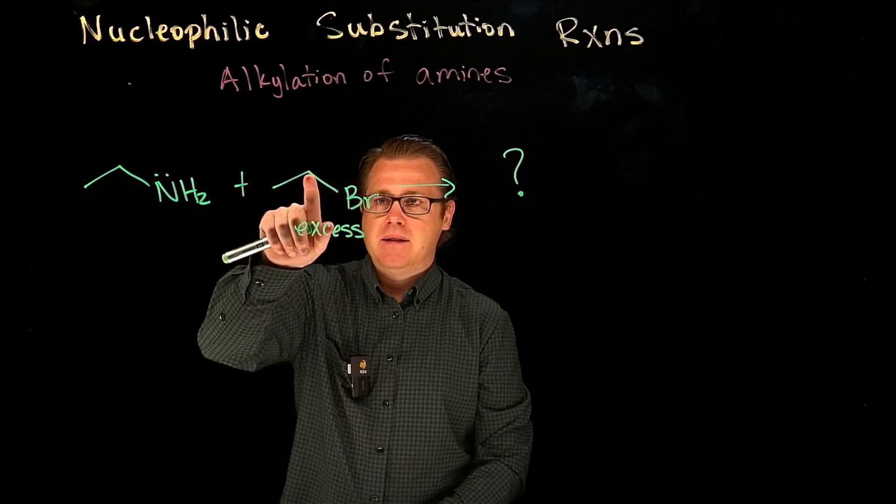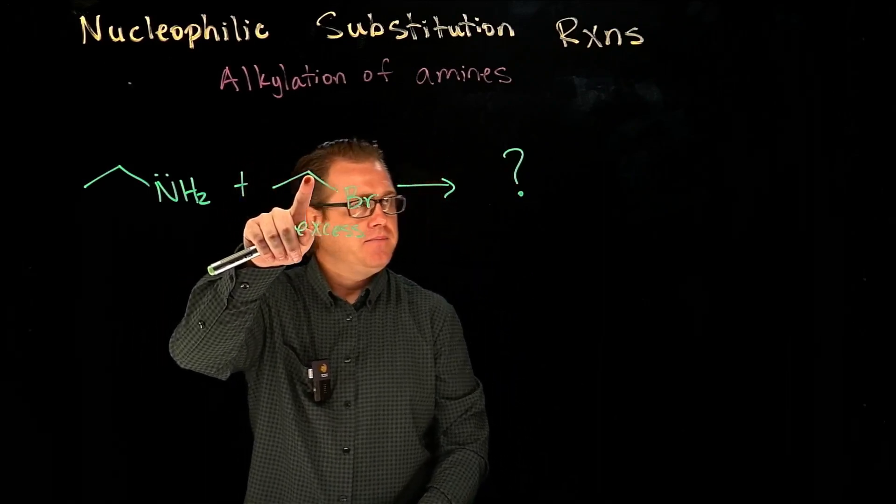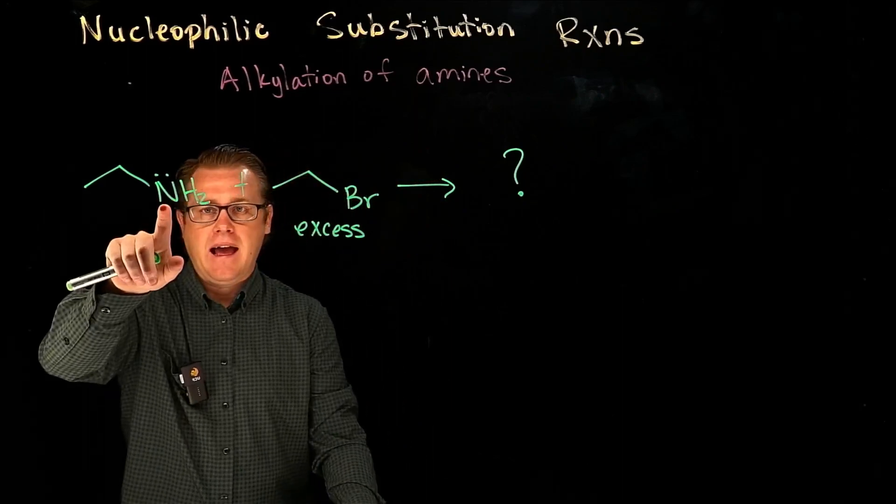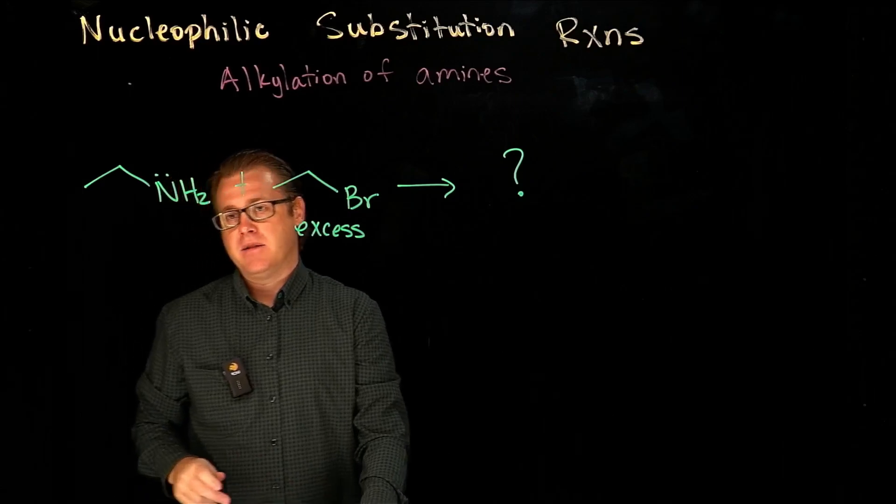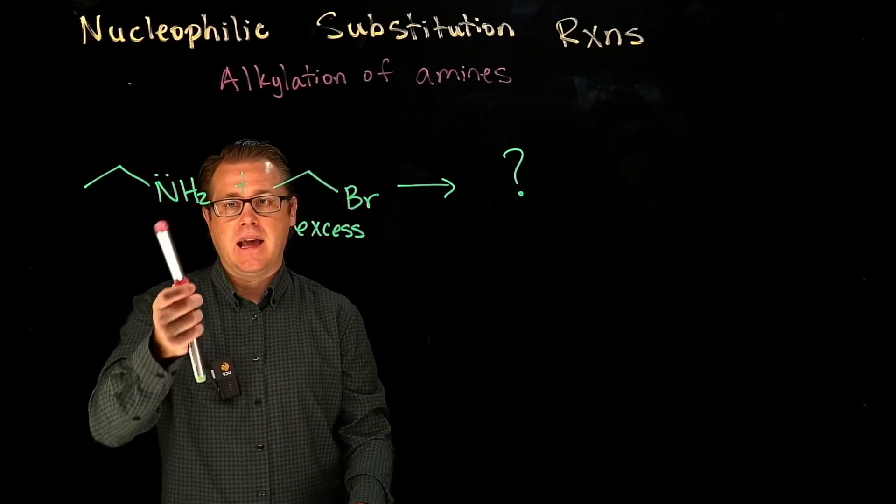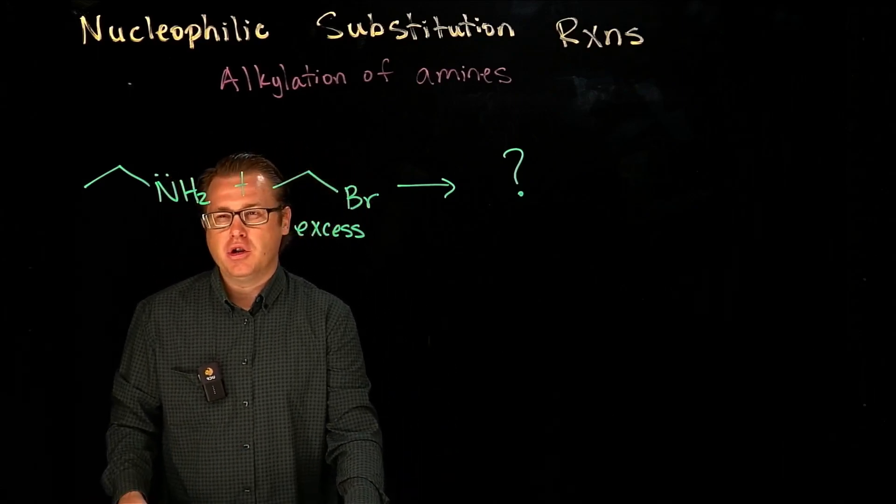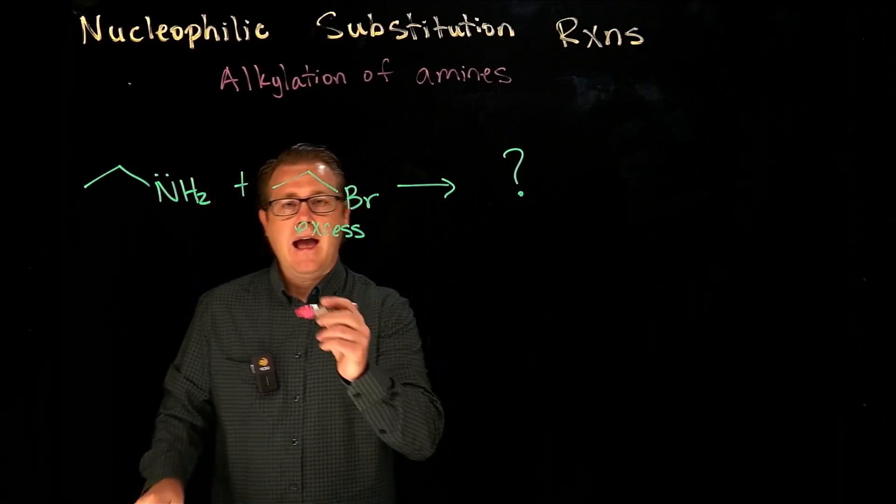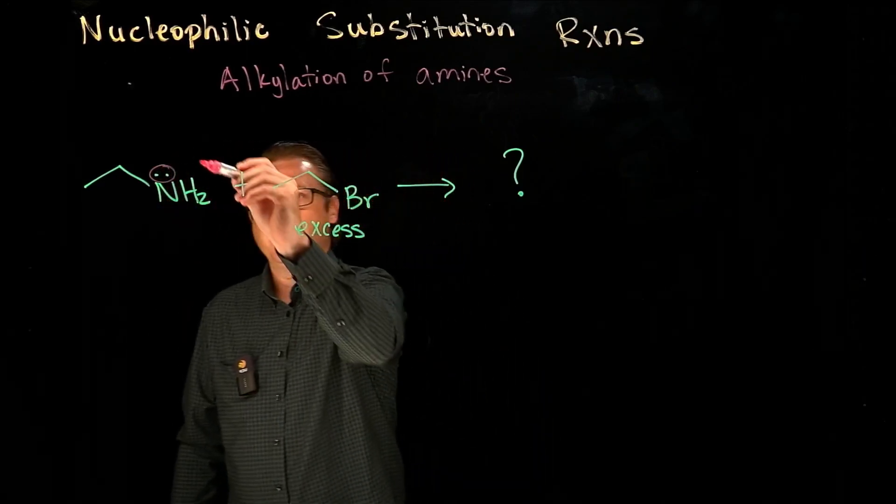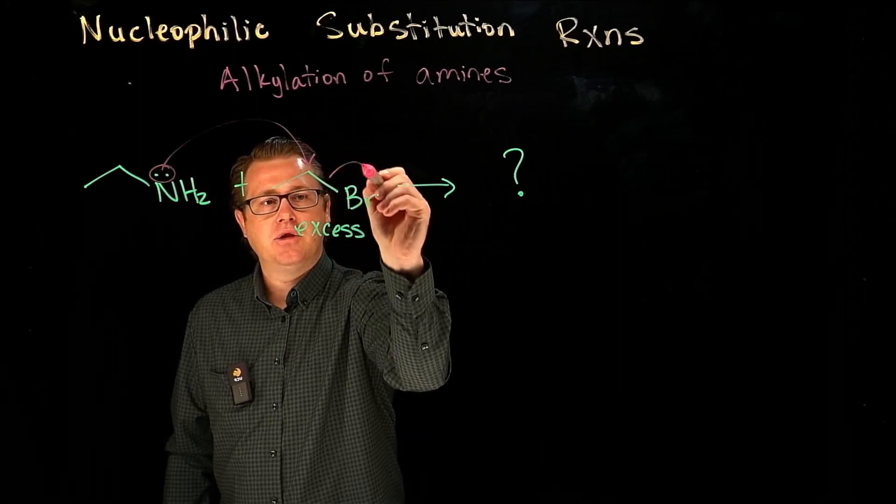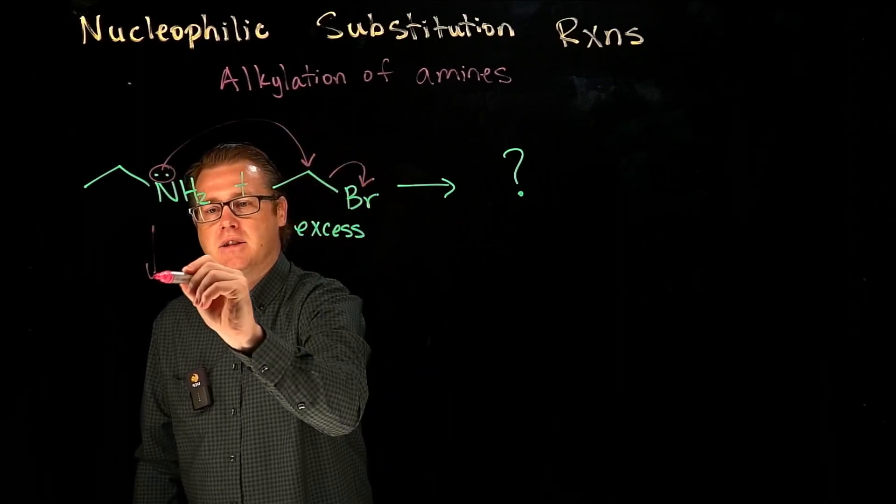So what we have here is an electrophilic carbon, and we have a nitrogen with a lone pair. Nitrogen atoms, or amines, I should say, are good nucleophiles. And so what happens is we're going to take this lone pair right there, and we're going to do a SN2-style reaction here.